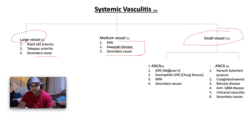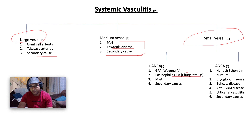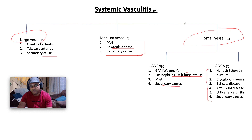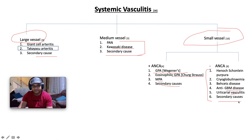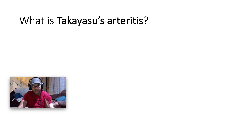Small vessel vasculitis is broadly partitioned into ANCA positive and ANCA negative. In the ANCA positive variety we have granulomatosis with polyangiitis, previously termed Wegener's granulomatosis, eosinophilic GPA previously termed Churg-Strauss, and microscopic polyangiitis, plus secondary causes. ANCA negative small vessel vasculitic syndromes include Henoch-Schönlein purpura, cryoglobulinemic vasculitis, Behçet's disease, anti-glomerular basement membrane disease, urticarial vasculitis, and secondary causes. In this video we are focusing on Takayasu arthritis.